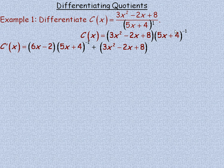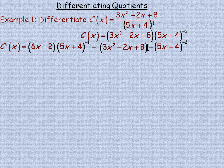Since 5x plus 4 to the power of negative 1 is a composite function, we use the chain rule. The negative 1 comes down in front, we write 5x plus 4 to the power of negative 2 (subtracting 1 from the exponent: negative 1 minus 1 equals negative 2), and then multiply by the derivative of the inner function, which is just 5. So that's the differentiation finished.